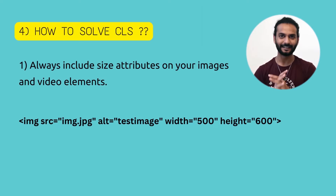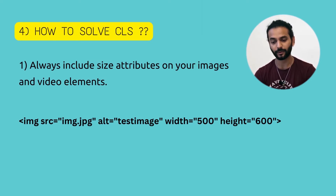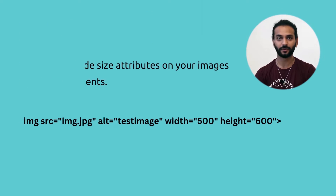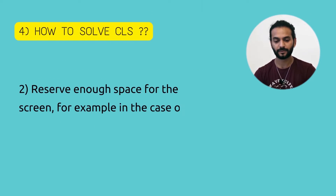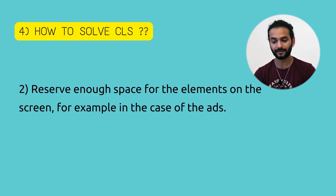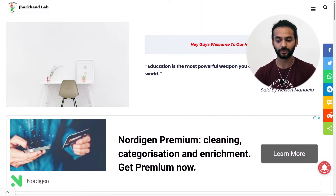Let's see how to fix CLS. The first thing: always include size attributes on image and video elements — you should always add height and width for videos and images on your website. The second thing: reserve enough space for elements on the screen.